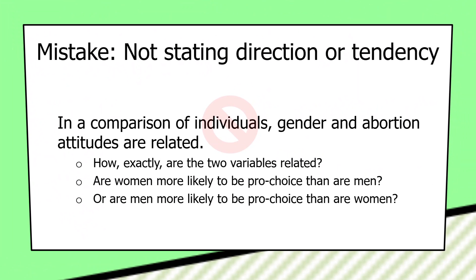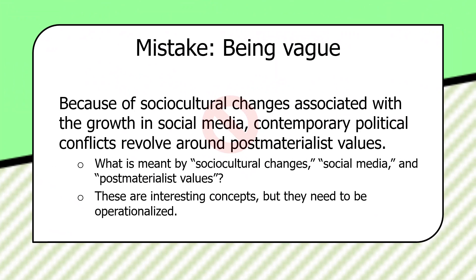A final mistake springs from poor explanations — when hypotheses are vague, you can usually trace them back to poorly thought-through explanations. For example: 'Because of socio-cultural changes associated with the growth in social media, contemporary political conflicts revolve around post-materialism and values.' That's a mouthful, but it's hard to figure out what it means. What are socio-cultural changes? What are post-materialist values? Don't be vague.